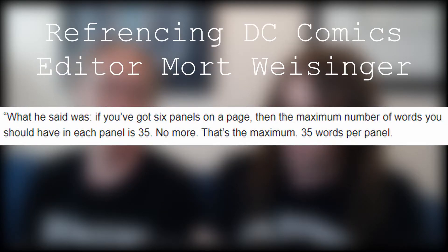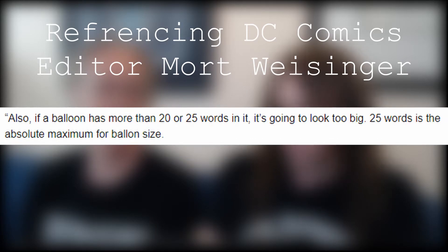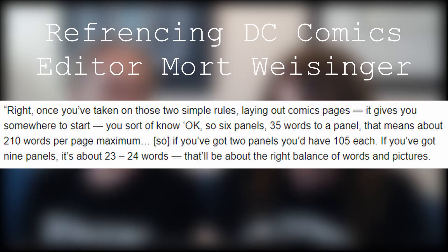So now that you've figured out what action you're going to have, you also need to have dialogue — what the characters are saying in the panels. For example, Alan Moore said if you've got six panels on a page, then the maximum number of words you should have in each panel is 35 — no more. Also, if a balloon has more than 20 or 25 words in it, it's going to look too big. 25 words is the absolute maximum for balloon size. So six panels, 35 words to a panel — that means about 210 words per page maximum. If you've got two panels you have 105 each; if you've got nine panels it's about 23 to 24 words. That'll be about the right balance of words and pictures.